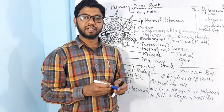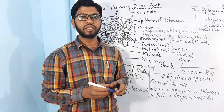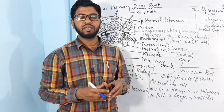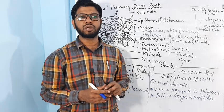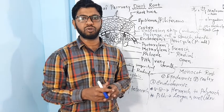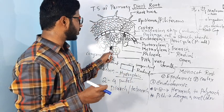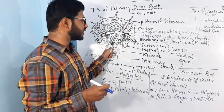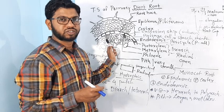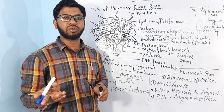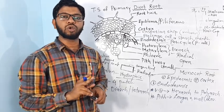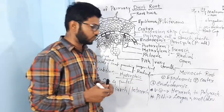In monocot, cambium is not present. That's why monocot stem and root both cannot show secondary growth. In dicot, cambium is present in the form of a wavy-shaped structure. Dicot root can show secondary growth, and secondary growth does not occur inside monocot root.